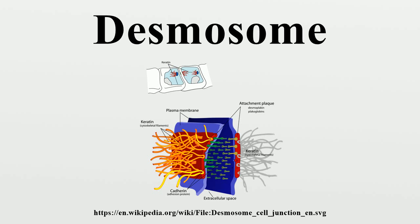Etymology. The first combining form, desma, new Latin from Greek desmos, meaning band, carries the meaning of binding or bonding things together. Combined with some, which comes from soma, meaning body, it thus makes a desmosome a binding body, a name that aptly describes how desmosomes bind cells together.